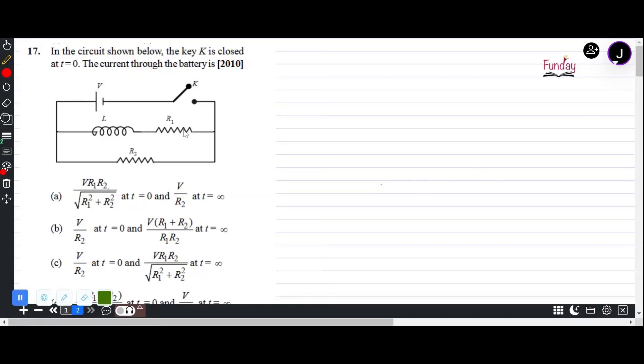Hi, this question has a circuit with an inductor and a resistor, and it asks what would be the current at t equals zero and t equals infinity.